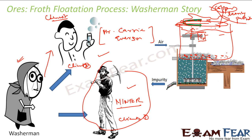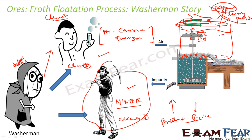With this, the froth flotation process came into picture. Since it was used to extract copper even from low-quality ore, copper mining became profitable, copper prices came down, and copper production scaled up worldwide. This led to significant development, since copper is widely used in industry. So everything started from the washerman — we give credit to Mr. Carey Everson, but the washerman deserves credit too. The main idea is that an innovative mind can bring change.